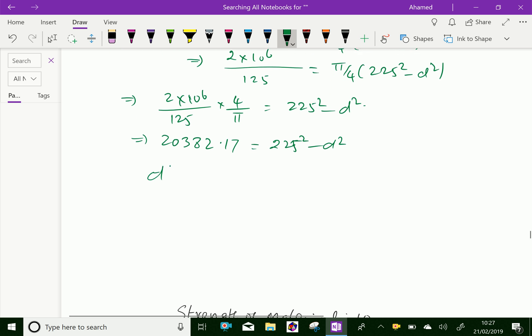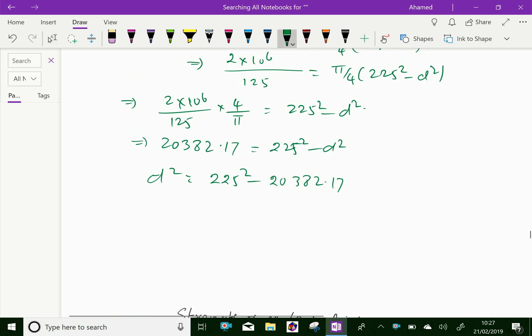Let us calculate this. 2 into 10 power of 6 into 4 over 125 into π equals 2382.17. Therefore, d squared equals 225 squared minus 2382.17. Then d equal square root of 225 squared minus 2382.17.